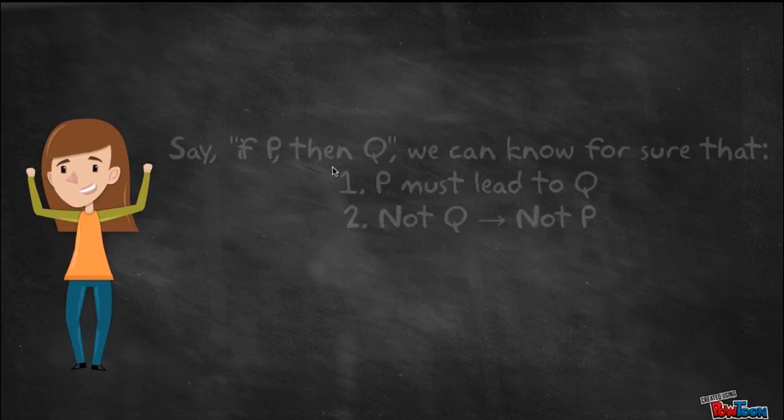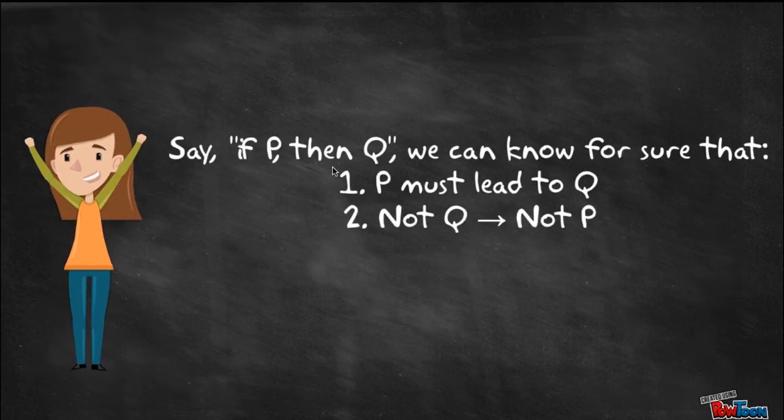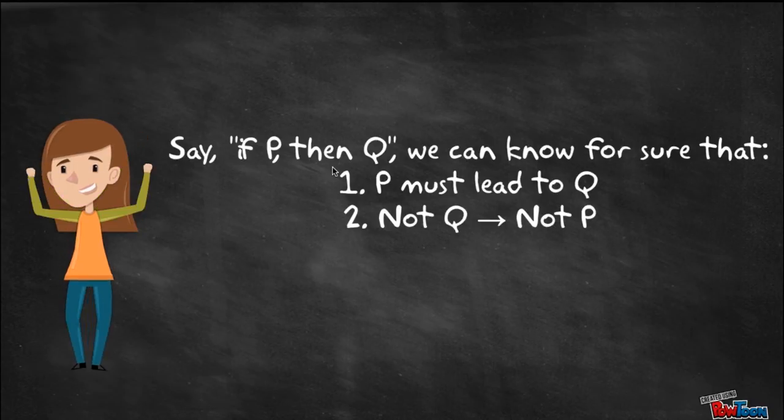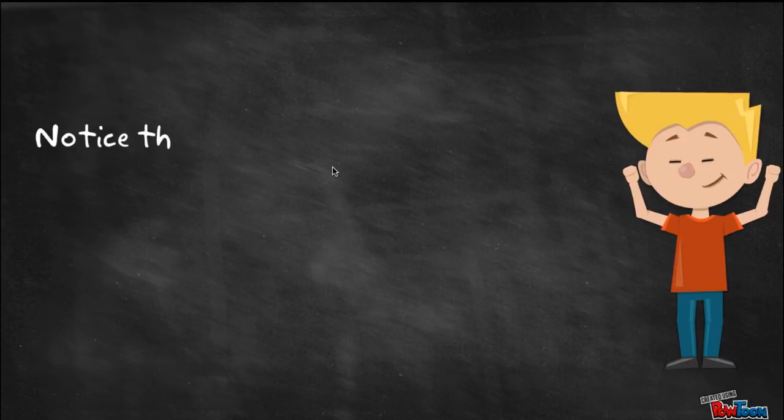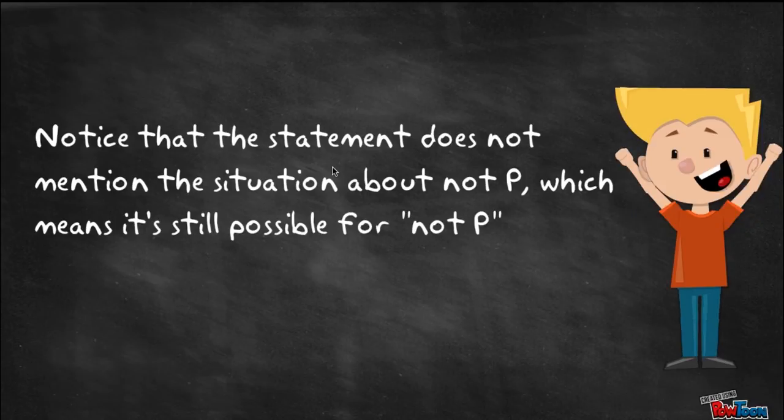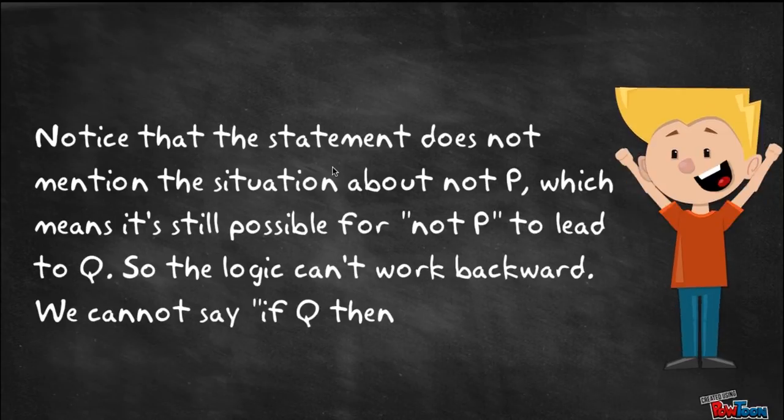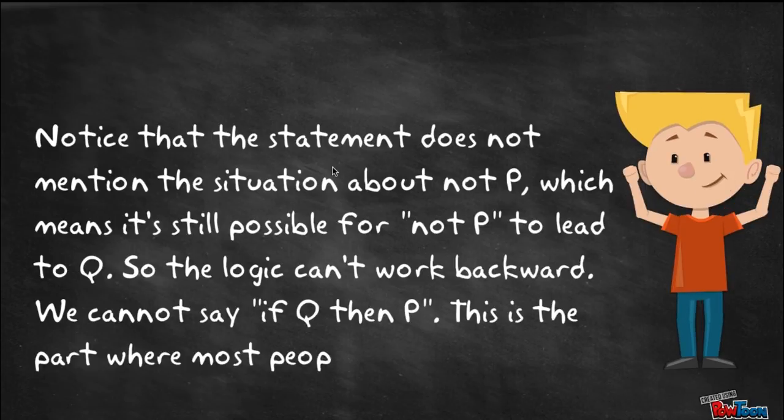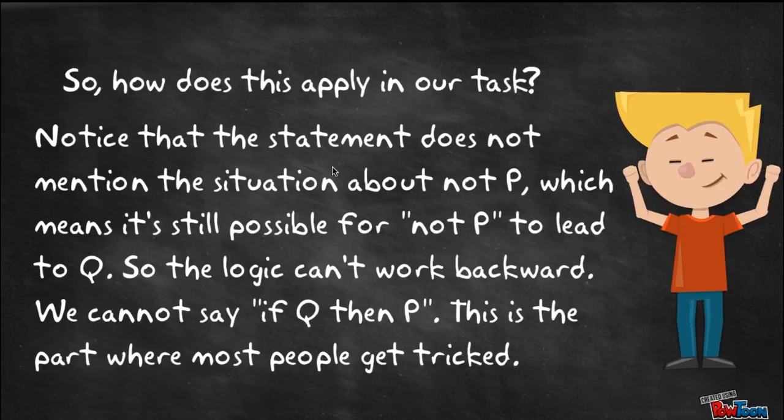Say, if P then Q, we can only know for sure that P must lead to Q. Also, that NOT Q means NOT P. Notice that the statement does not mention anything about what happens if NOT P occurs, which means it's still possible for NOT P to lead to Q. Thus, we cannot say if Q then P. This is the part where most people got tricked.